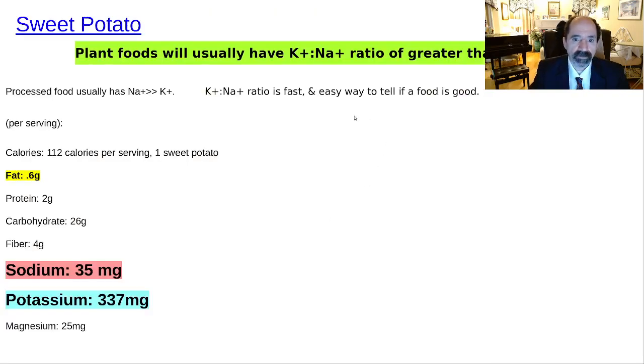A couple things about food. Here's a sweet potato, one of the best foods in the world, and a pretty typical potassium to sodium ratio of about 10 to 1: 337 milligrams of potassium per serving compared with 35 milligrams for sodium. So about 10 to 1 on sweet potatoes.